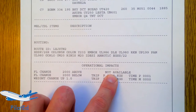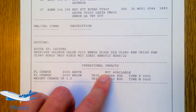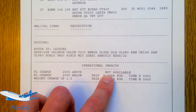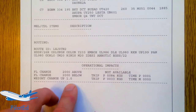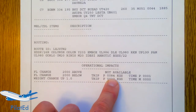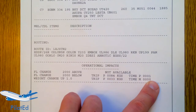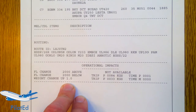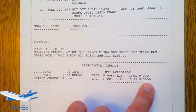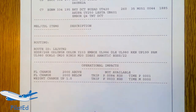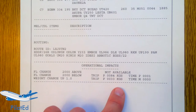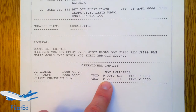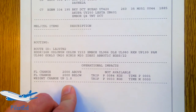There's also an operational impacts section — quite a useful little page. It tells you the impact of flying 2,000 feet above or below your planned cruise altitude. Two thousand feet above is not available because we couldn't reach FL400 due to weight. Staying at FL360 would cost an extra 84 kilos and one extra minute. For every tonne above planned weight, there's a time penalty — for example, an extra tonne of fuel requires carrying an extra 33 kilos just to move that fuel.